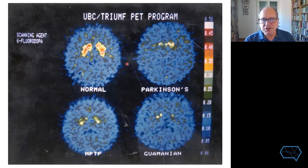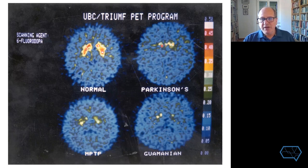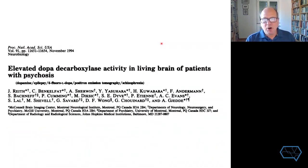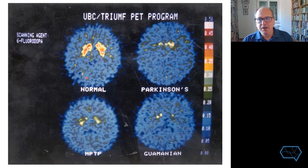By introducing the radioactive tracer fluorodopa into this pathway, we can label the living dopamine neurons by virtue of their ability to take up the tracer, decarboxylate it, and trap it inside granules or vesicles. Here in some of the first PET scans with fluorodopa, obtained when I was a graduate student at the University of British Columbia, we see that a normal individual has high uptake in the dopamine-rich caudate and putamen, whereas people with Parkinson's disease have a very substantial loss of that dopamine capacity, especially in the putamen — and this matches perfectly with autopsy results.